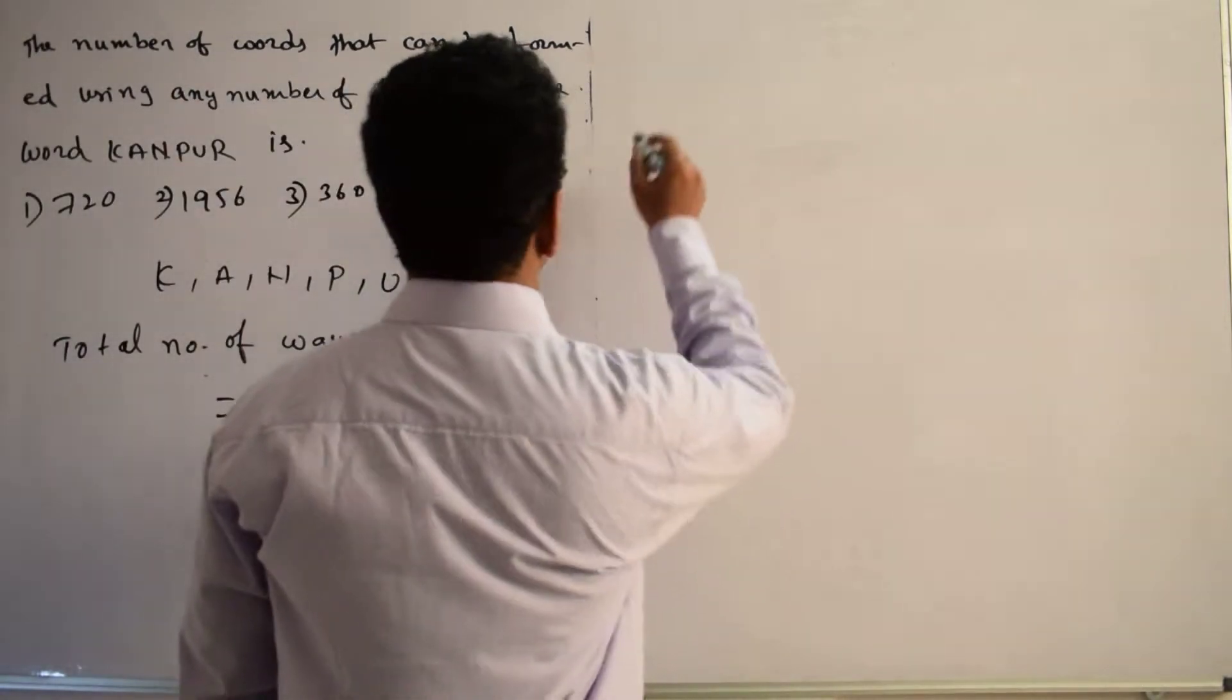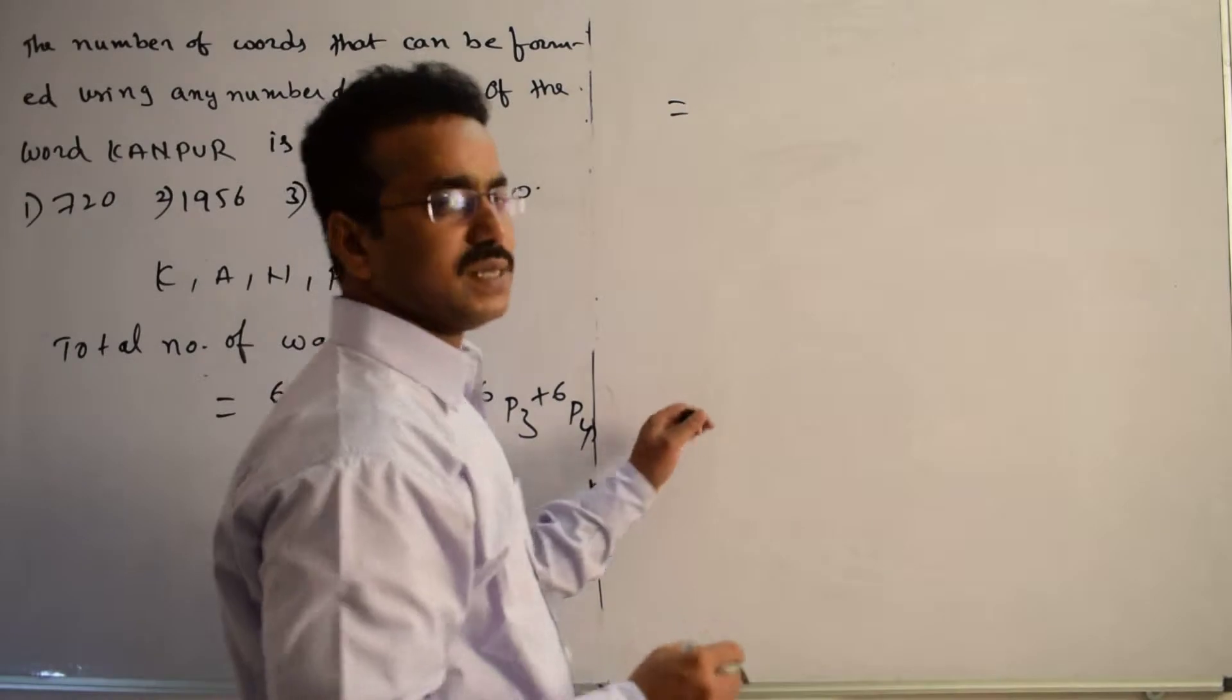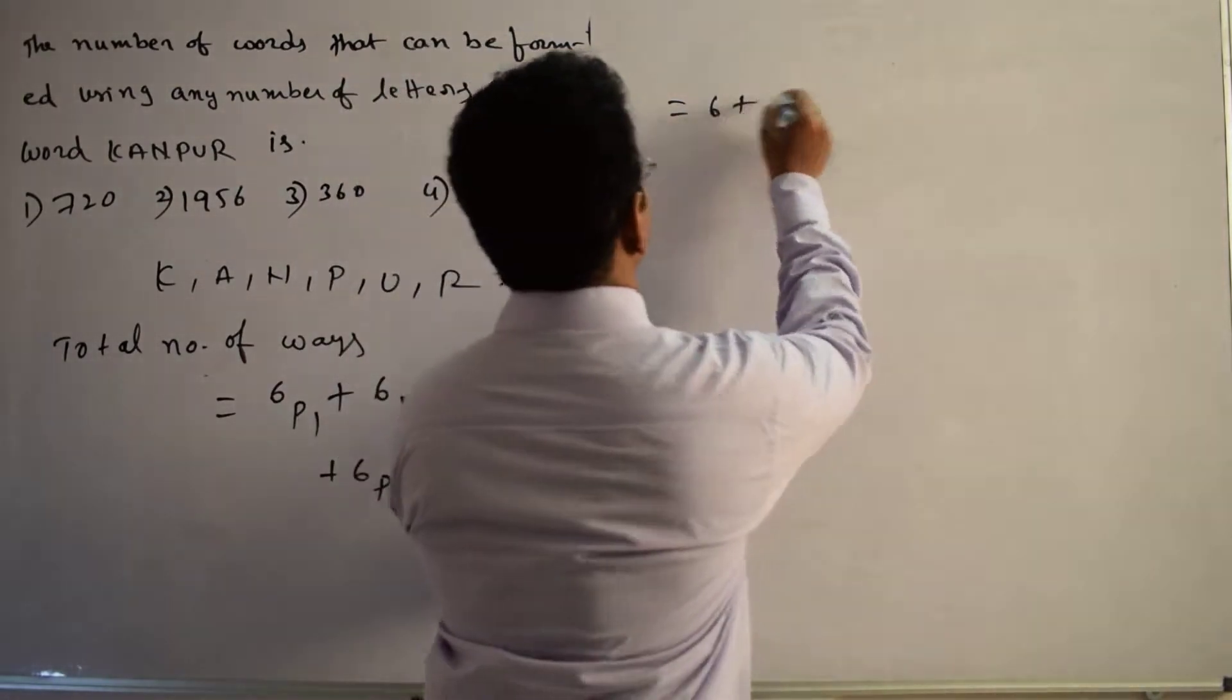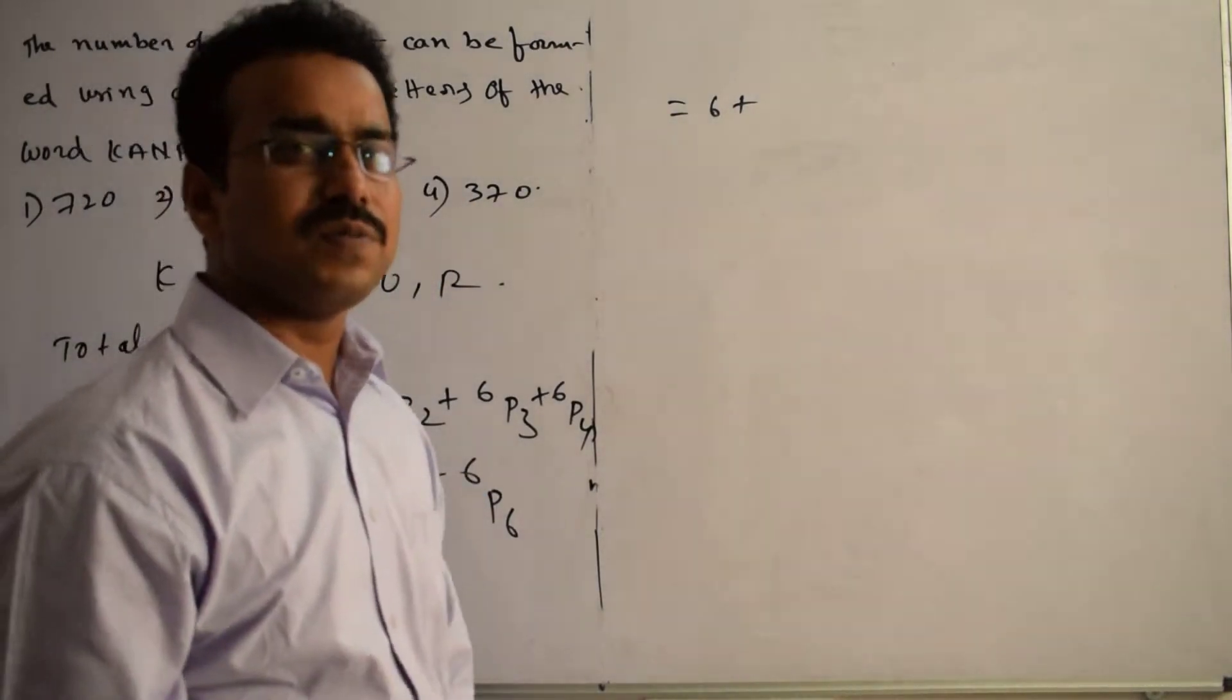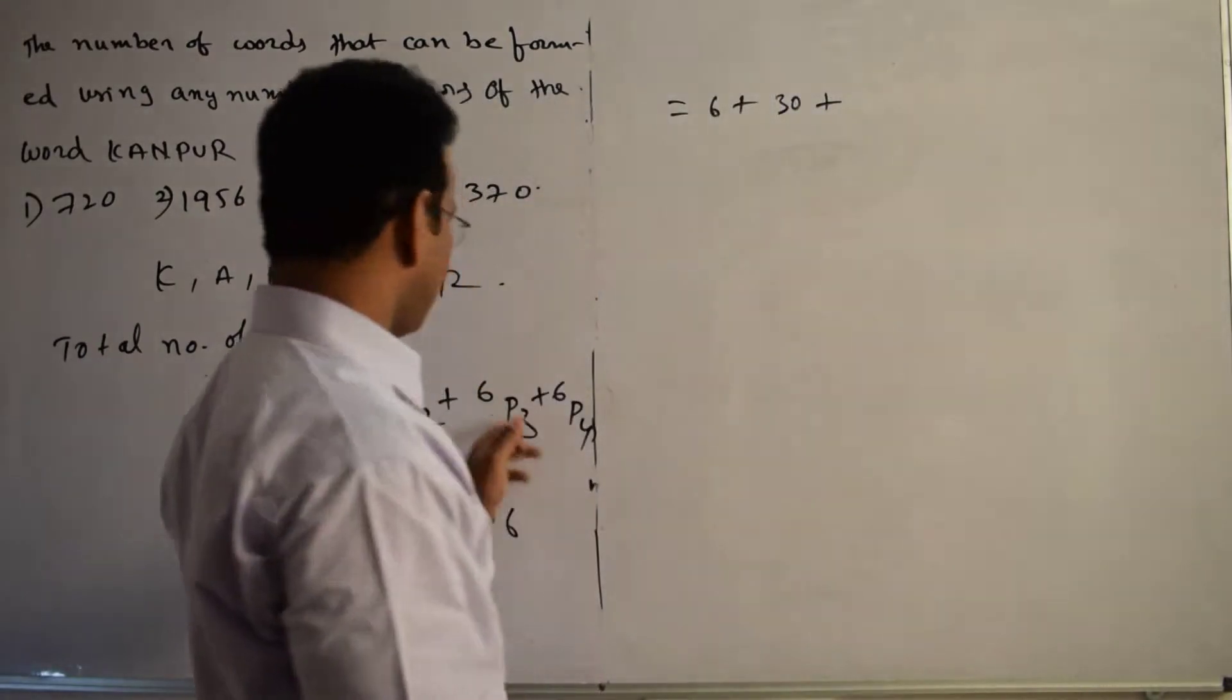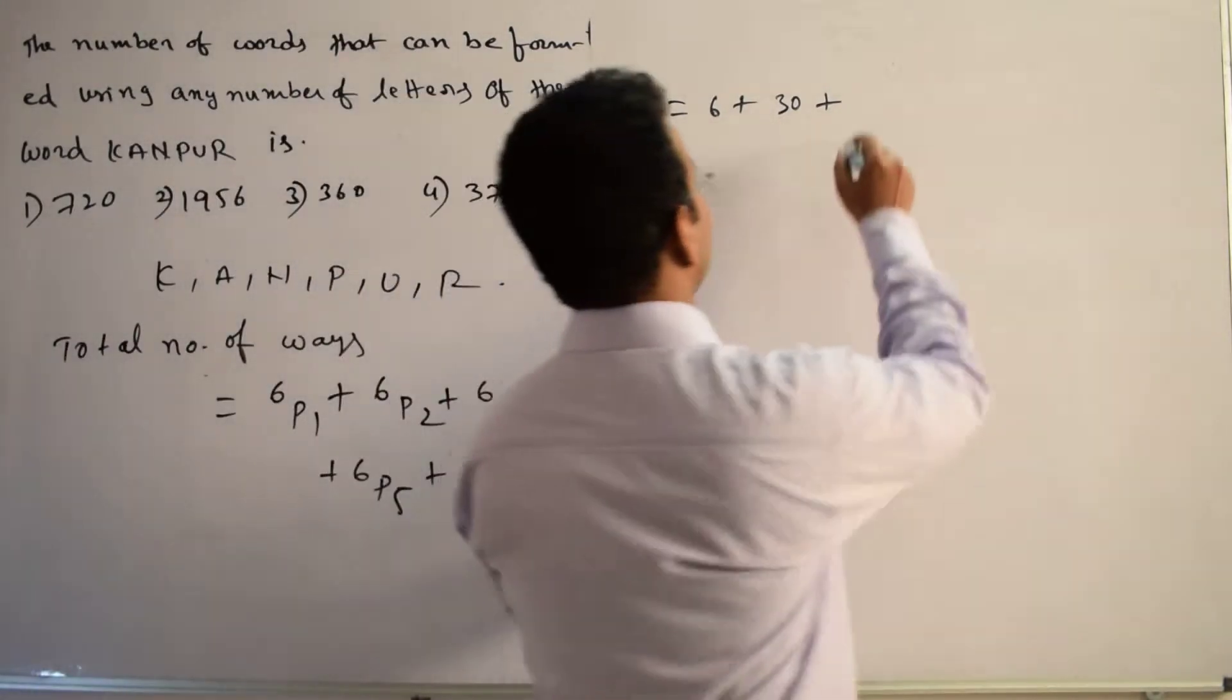Now, let me simplify. 6P1, 6 factorial divided by 6 minus 1, 5 factorial, cancels to 6. Plus, here 6P2, 6 minus 2 means 4 factorial, up to 4 factorial cancels, 6 into 5, 30. Plus 6P3, 6 minus 3, 3 factorial cancels, 4, 5, 6. See, 120.